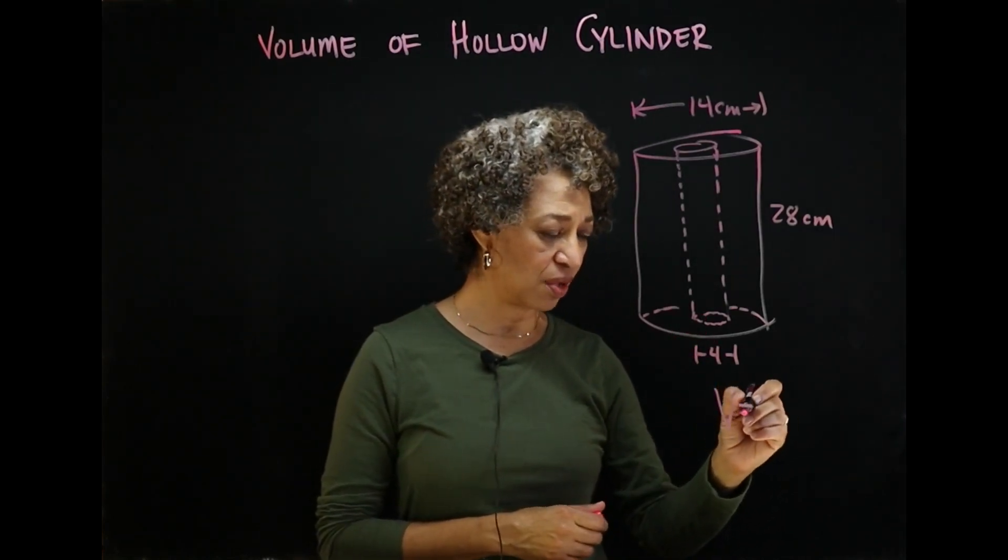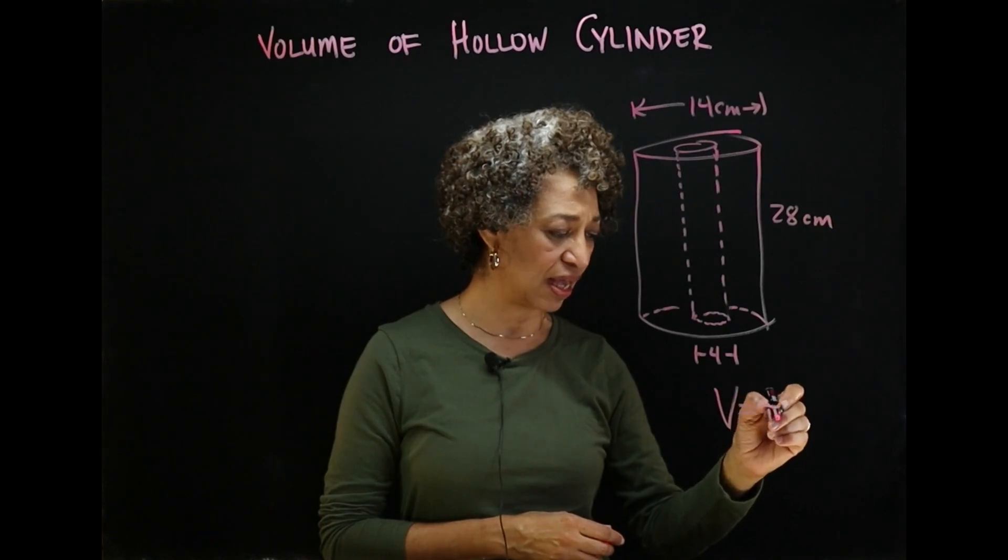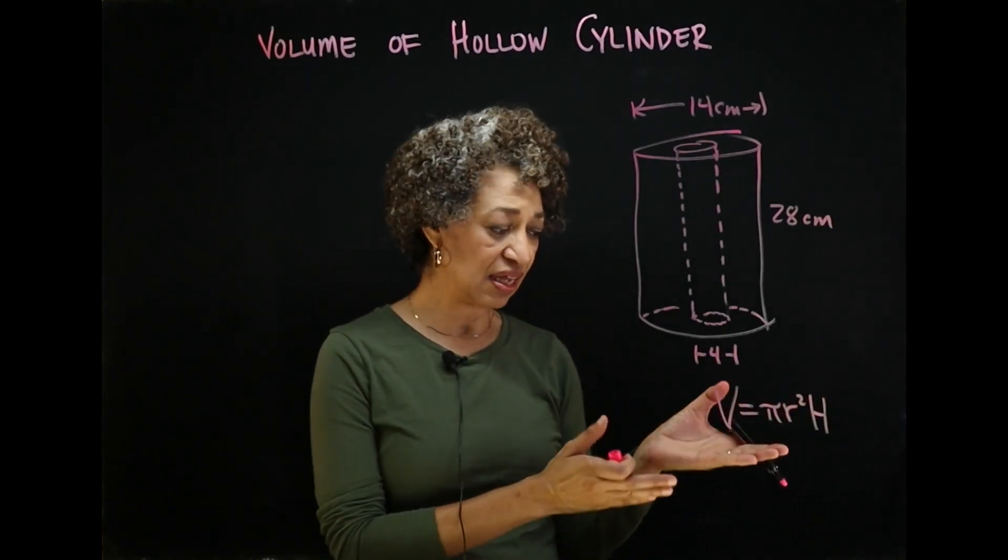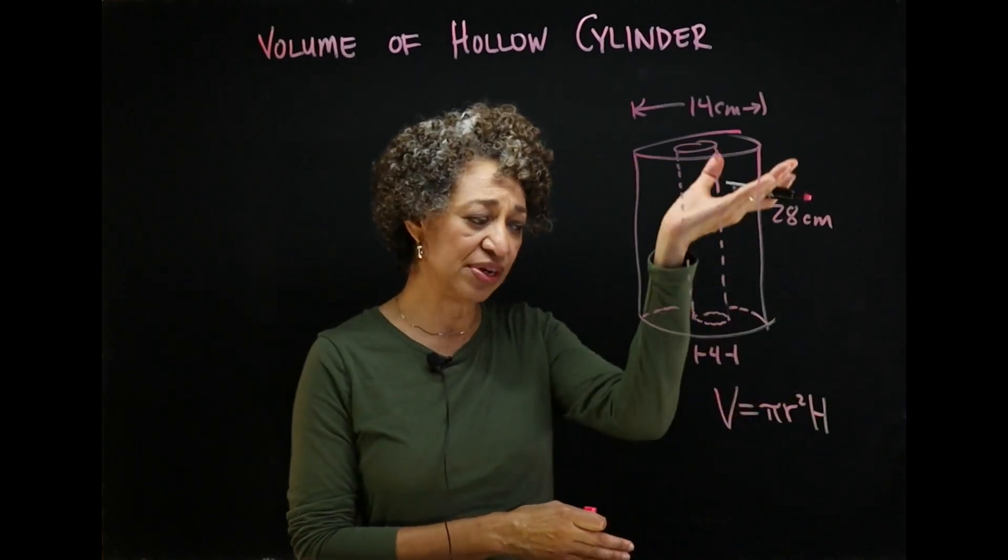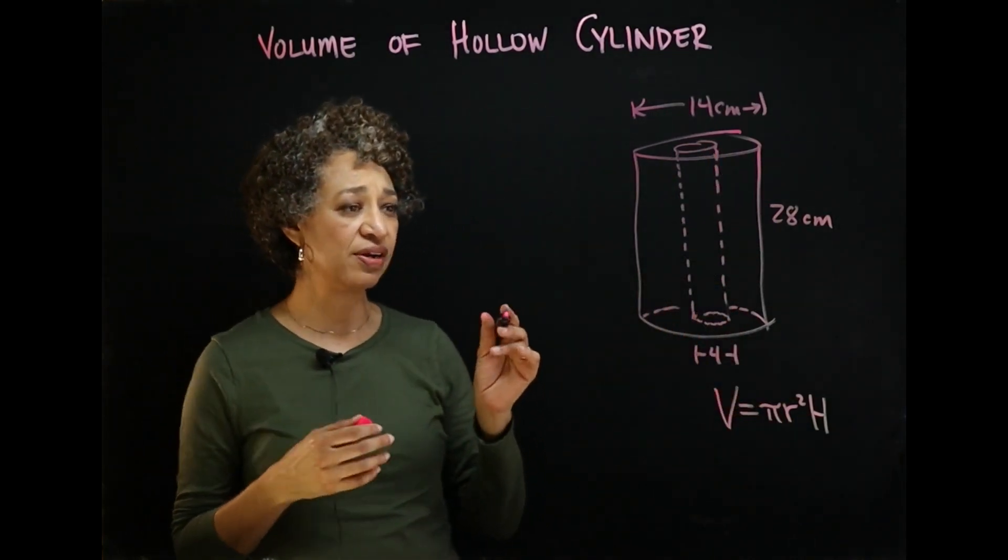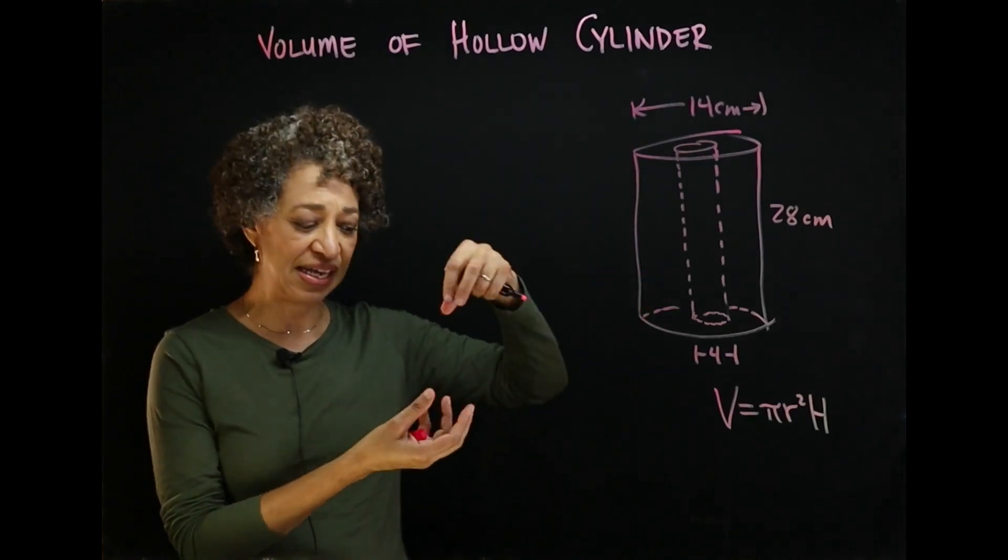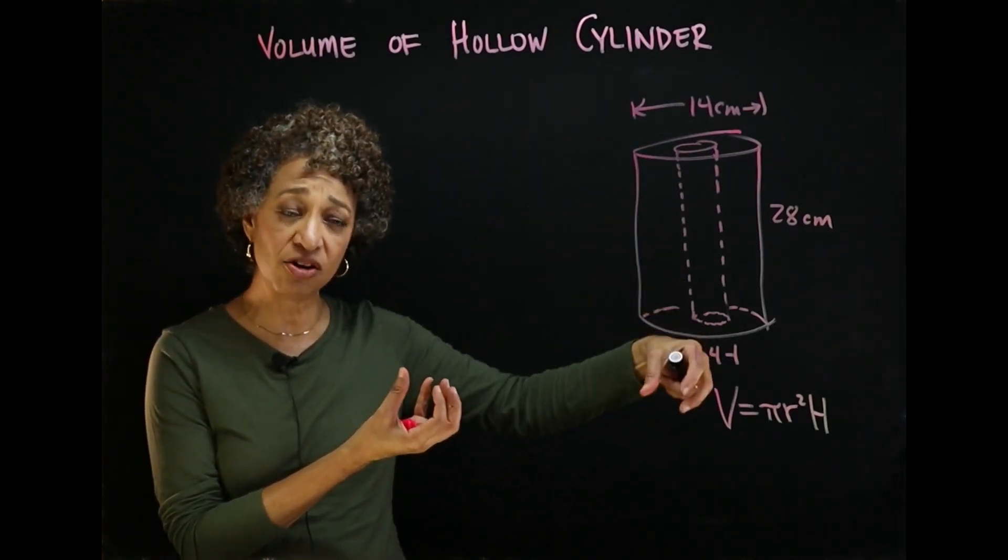I hope you remember the volume of a cylinder is pi times the radius squared times the height. It is an area raised through another dimension called height. And so we're going to find the volume of this thing. Now I need to subtract the inner cylinder from the outer cylinder.